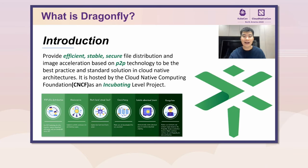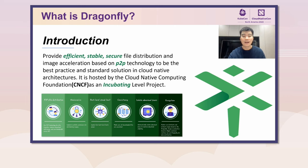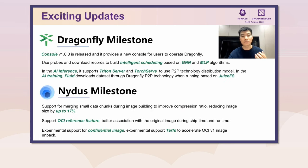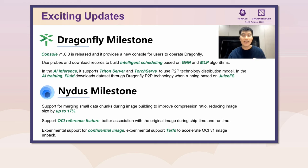Hello, I'm Gaius. I'm going to introduce Dragonfly. It provides file distribution and image acceleration based on P2P technology. Let me introduce the milestones. Dragonfly provides a new control console and supports intelligent scheduling. The most important is file distribution. In AI inference, it supports Triton Server and TorchServe to accelerate model distribution.